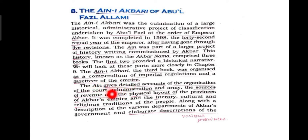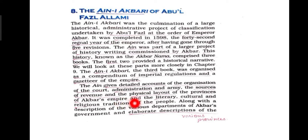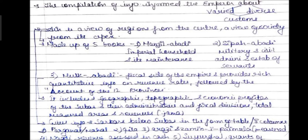The third book is a detailed account of the organization of the court, the administration, the army, the sources, the revenue, and the physical layout. It also provides knowledge about the provinces of Akbar's empire, as well as the literary culture and religious traditions. It compiles information from the emperor about very diverse customs — it is a view of the regions from the center, and a view of society from its apex.